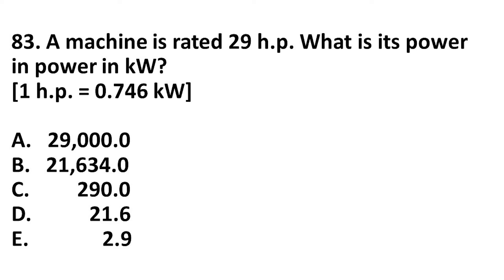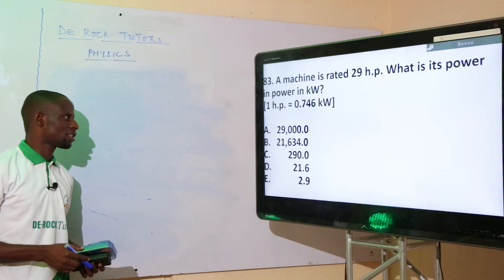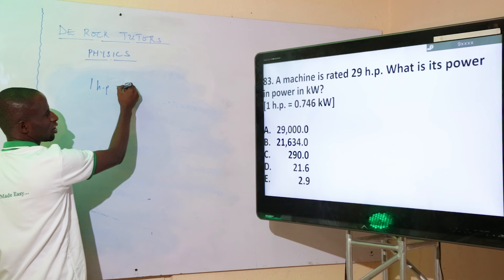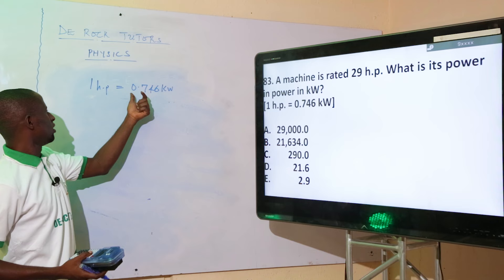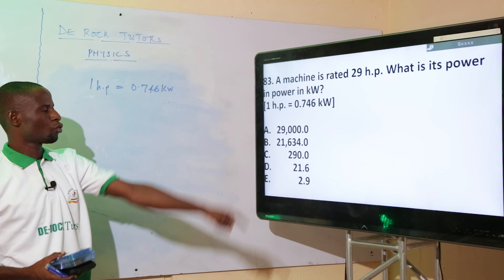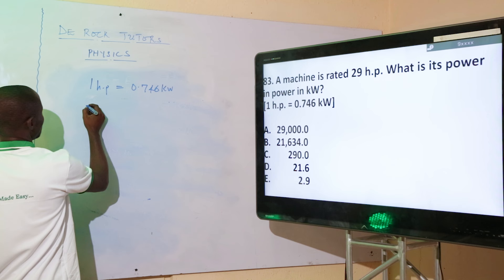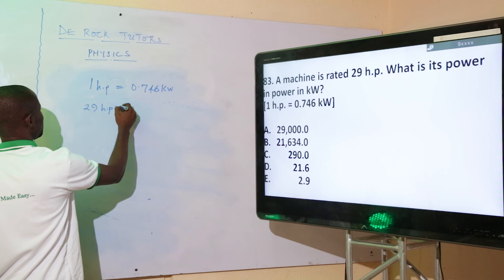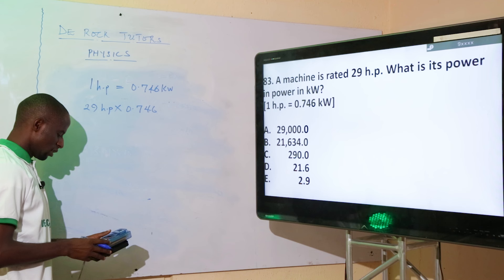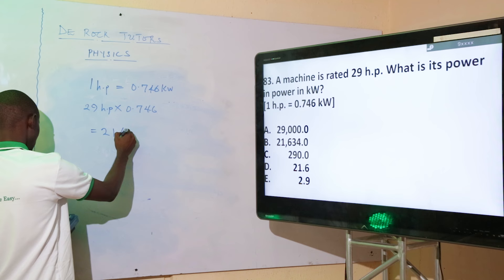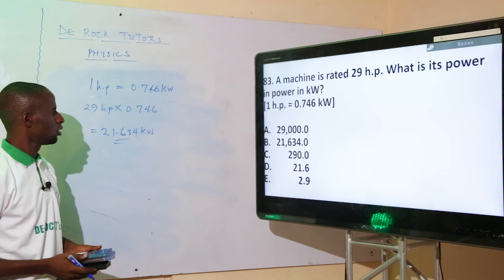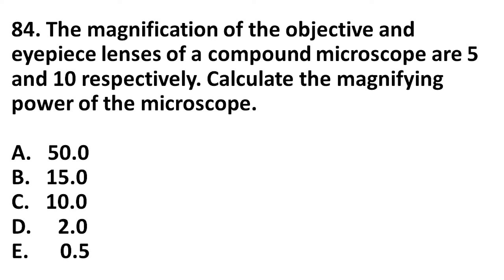A machine is rated 29 horsepower. What is its power in kilowatts, given that 1 horsepower equals 0.746 kW? Simply multiply: 29 × 0.746 = 21.634 kW. The correct option is option B.